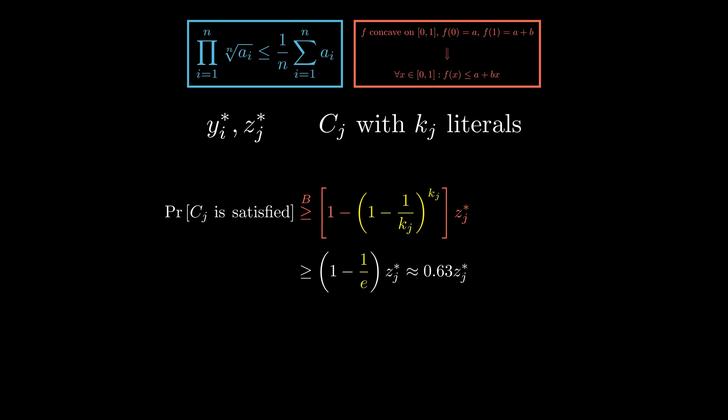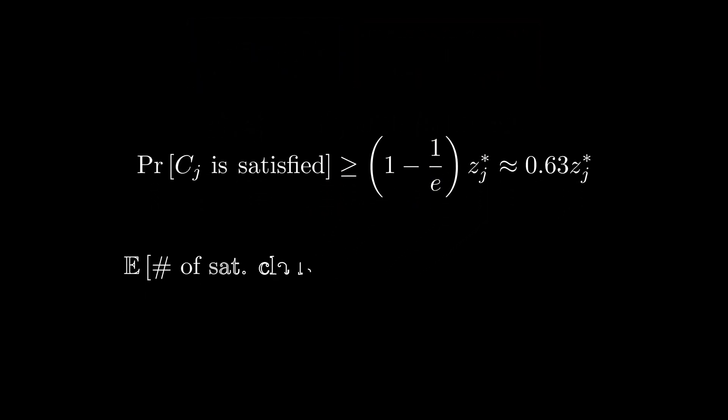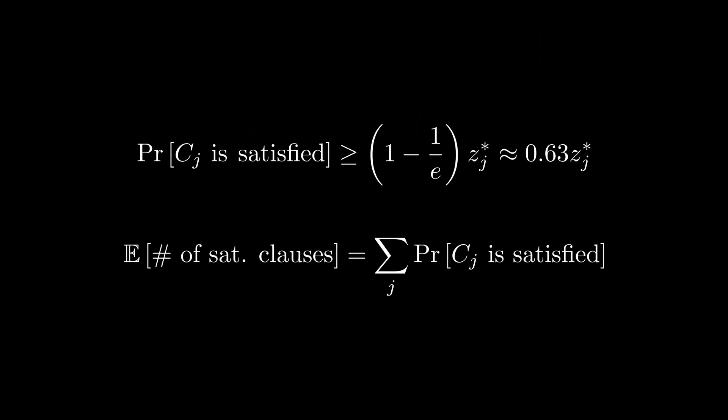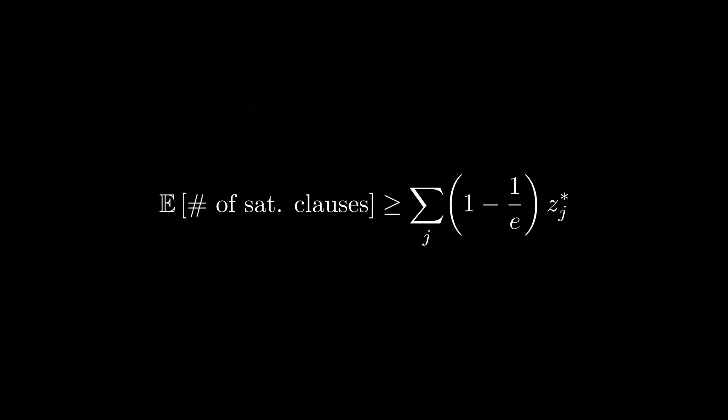This is exactly what we wanted, because the expected number of satisfied clauses is equal to the sum of the probabilities that they are satisfied, which, using our inequality, gives the following. Taking the constant out, we get the sum of clause variables, which is the objective function and so the optimum, meaning that the algorithm satisfies, in expectation, at least 1 - 1 over e clauses of the optimum.